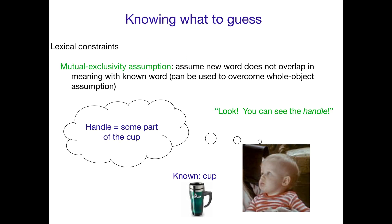Another constraint is the mutual exclusivity assumption. This is very useful because it means the child assumes a new word does not overlap in meaning with a known word. Children essentially hate true synonyms. In fact, adult languages in general are not fond of true synonyms where a new word completely means the same thing as another word. So children assume that a new word does not have the same meaning as a known word — two meanings are mutually exclusive with each other.